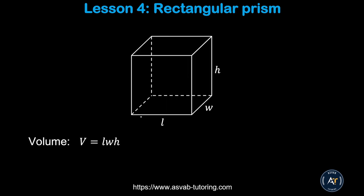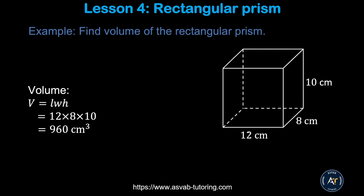Now we'll learn how to find the volume of a cube. The formula is V equals length times width times height. In this example, the length is 12, width is 8, and height is 10. Multiplying all of them gives you 960 cubic centimeters.